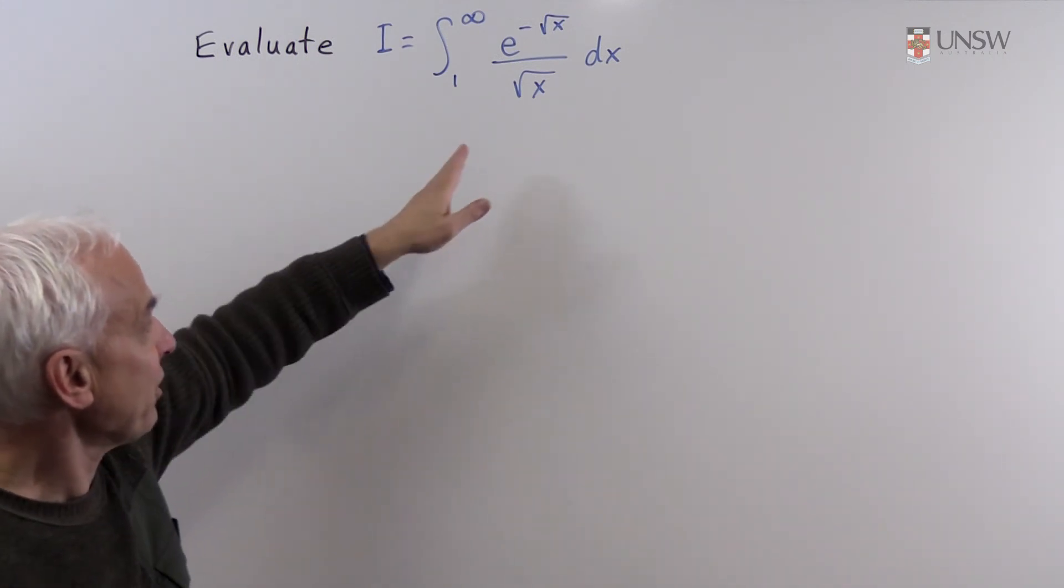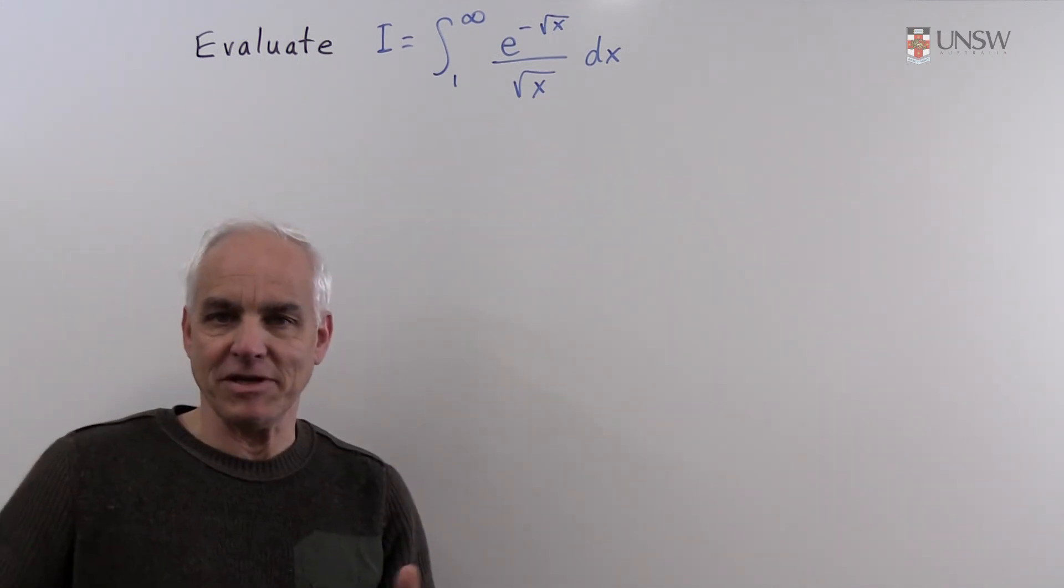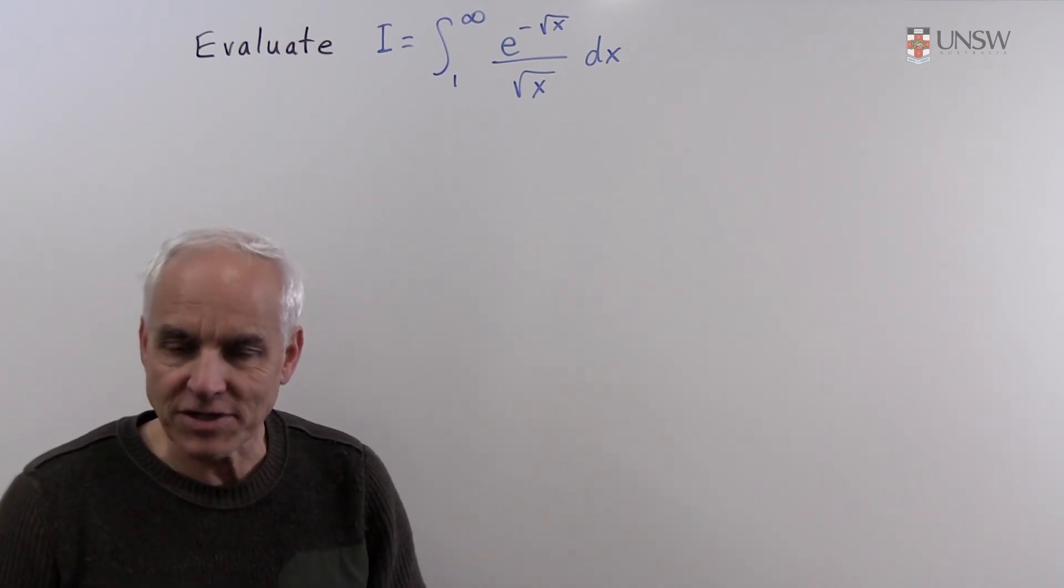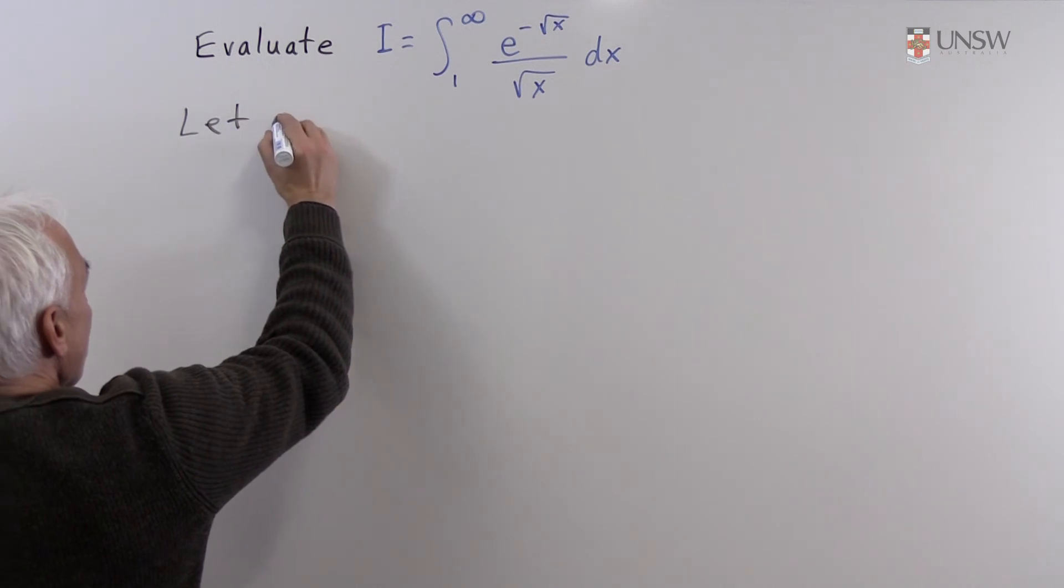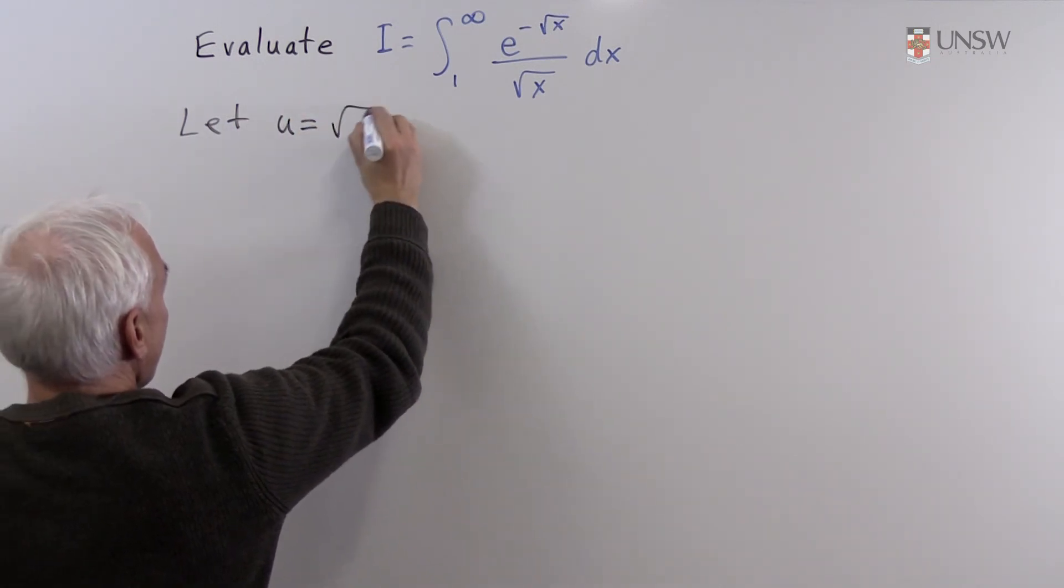We don't particularly like the square root of x there, that's a little bit difficult, so the obvious thing to do is to make a substitution. Let's let u equal square root of x.